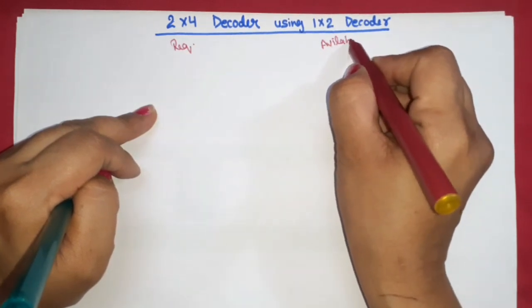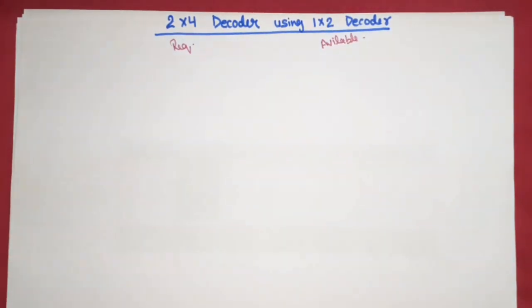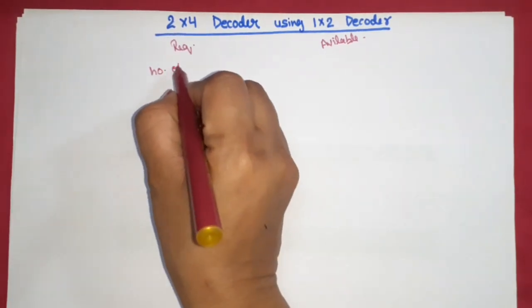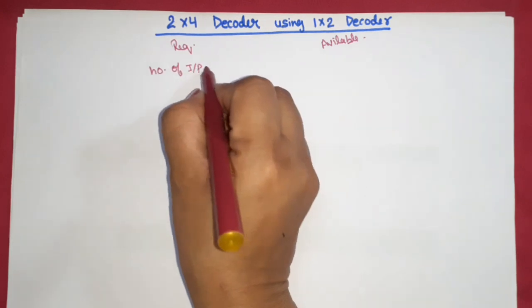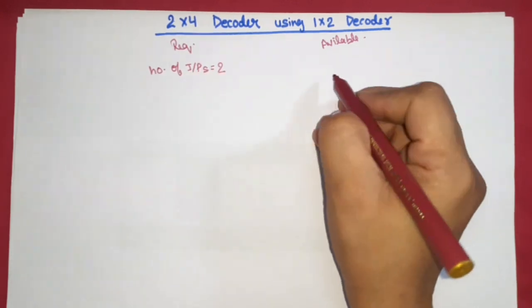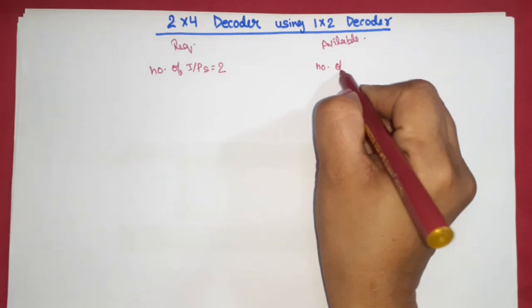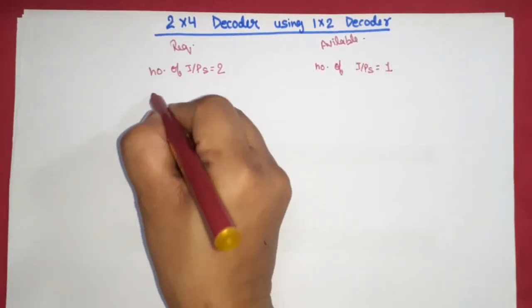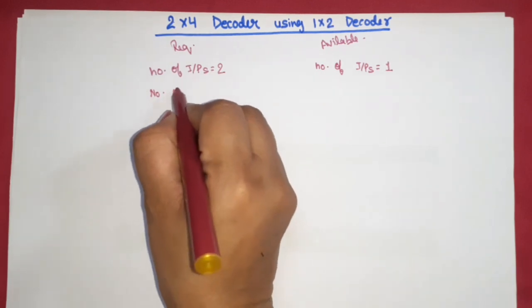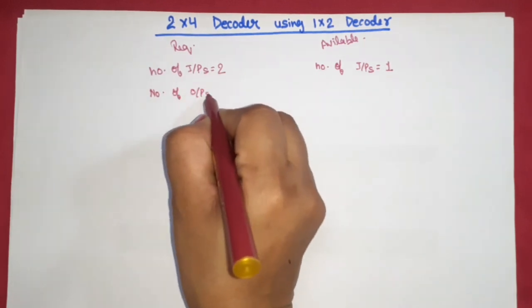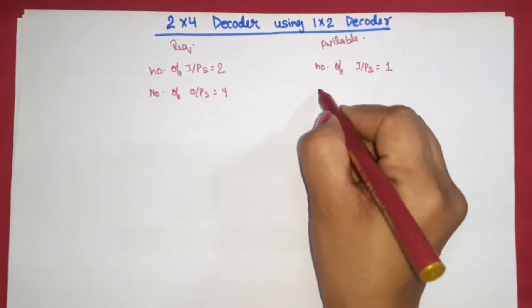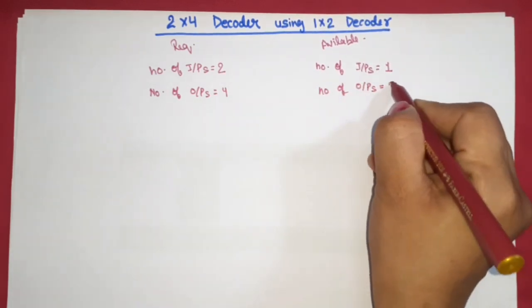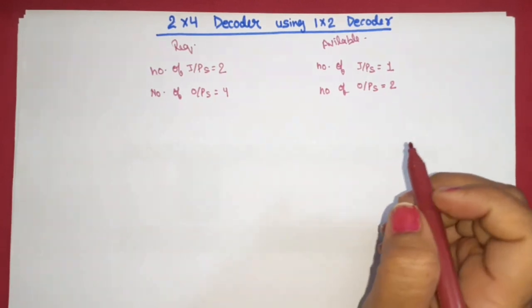Now, how many inputs does the required decoder have? The number of inputs for the required two-to-four decoder is equal to two, and for the available one-to-two decoder the number of inputs is equal to one. The number of outputs for the required decoder is equal to four, and for the available decoder it is equal to two.